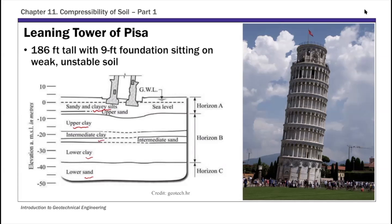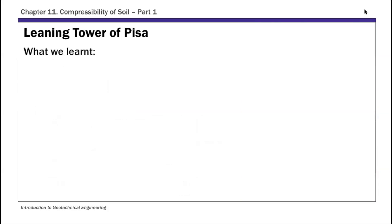A few things we can learn from the Leaning Tower of Pisa case. Looking at this soil profile, the differential settlement is due to the increased compressibility and deformation of soil on the southern end of the tower — the right-hand side. There was increased settlement and compressibility on that side, which is why the tower is leaning.